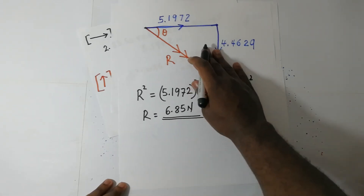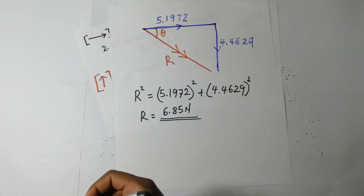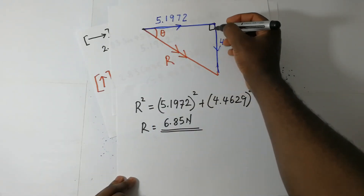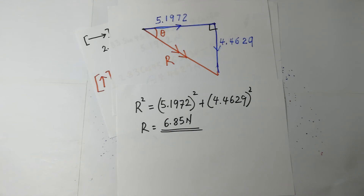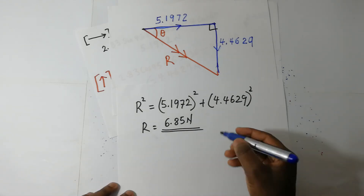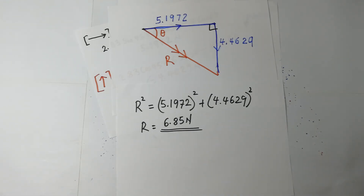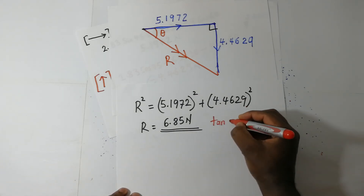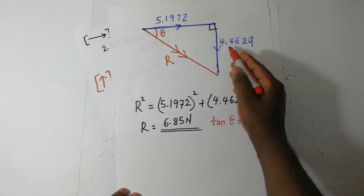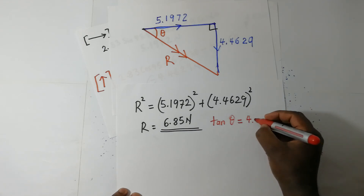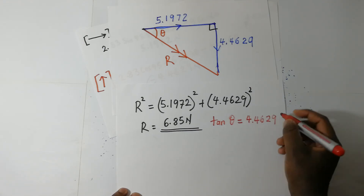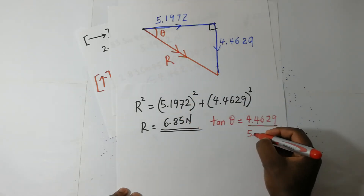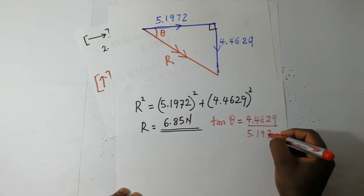Then we go ahead and find the direction of the resultant. Since this is a right angle triangle, we can go ahead and use the tangent of that angle. We know that the tangent of that angle is given by the opposite, which is 4.4629, divided by the adjacent, which is 5.1972.